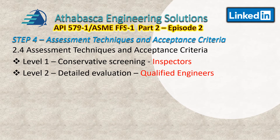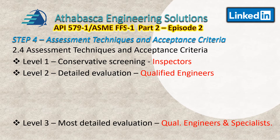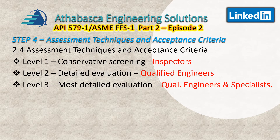Level 2 is a more detailed evaluation and must be done by qualified engineers according to the standard. The procedures are intended to provide results that are more precise than level 1. Level 3 is the most detailed evaluation, and may involve specialists performing finite element analysis and very intensive calculations. The cost goes up with each level of assessment. Level 3 procedures may employ numerical techniques like FEA or experimental techniques.